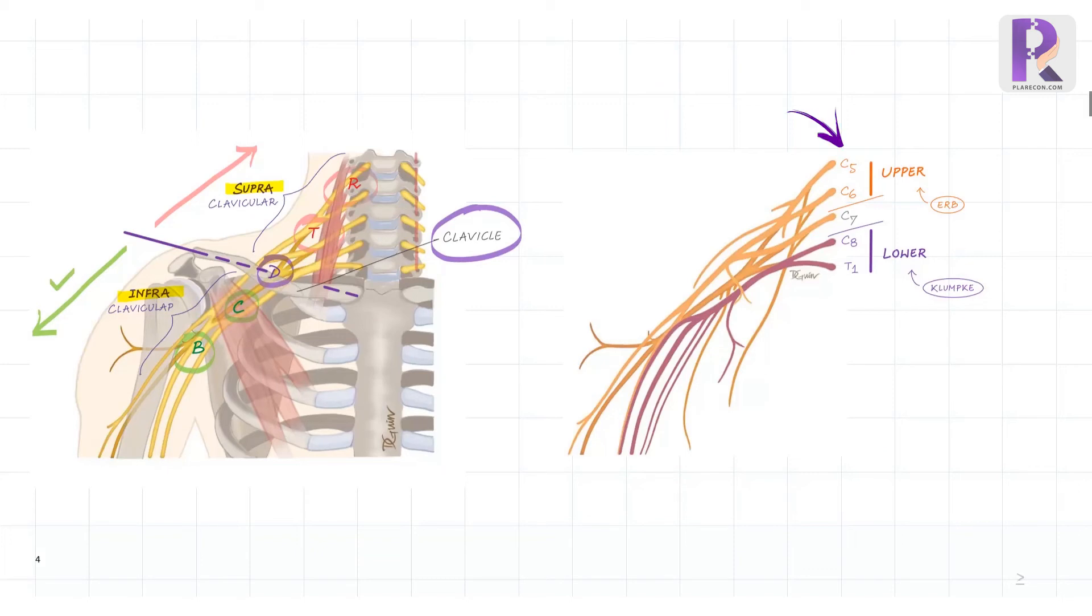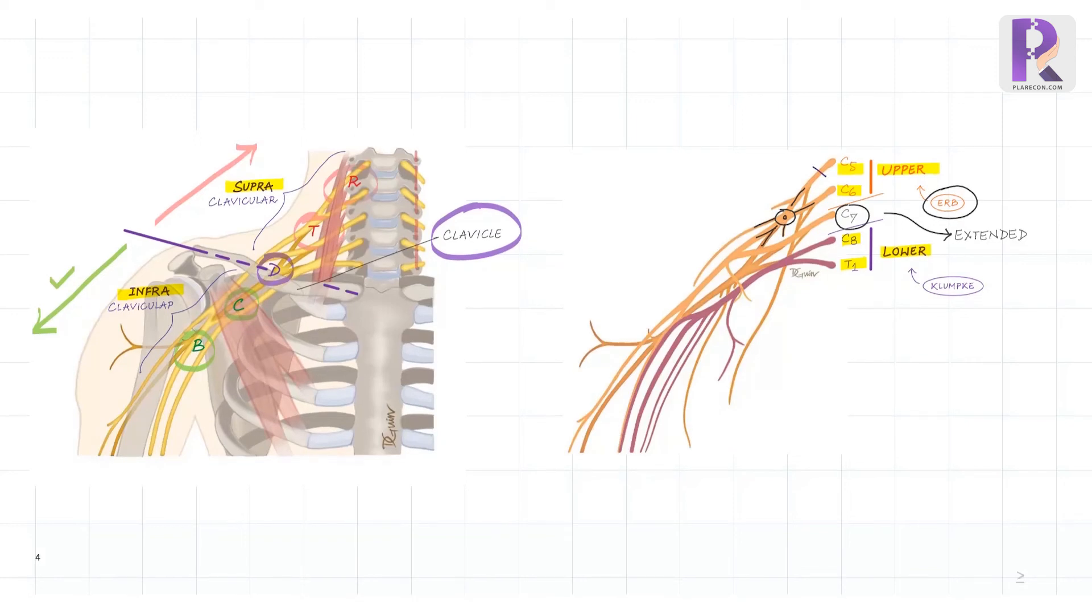Now coming to the roots, C5 and C6 are classified as upper brachial plexus, whereas C8 and T1 lower. When C7 is also involved along with C5 and C6, it's called extended upper brachial plexus palsy. The popular Erb's palsy is a classical example of upper plexus involvement, where the injury is to the upper trunk where C5 and C6 meet. However, upper plexus injuries involve all patterns, like C5 only injury or C5 plus C6 injury.